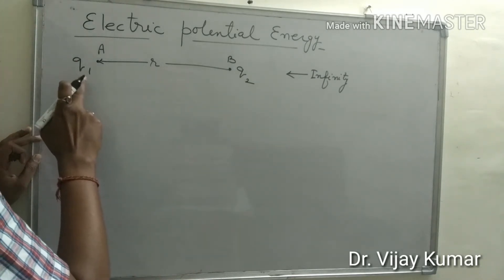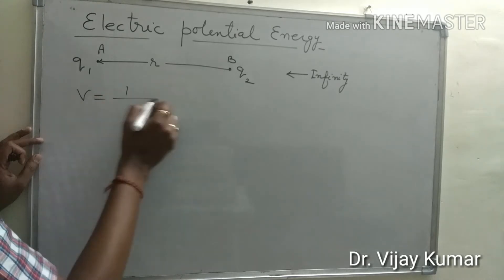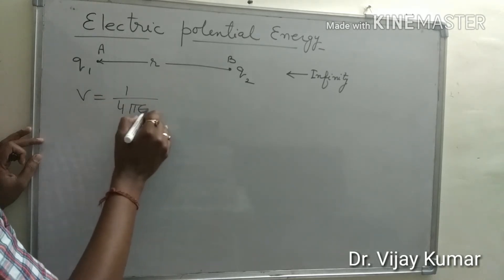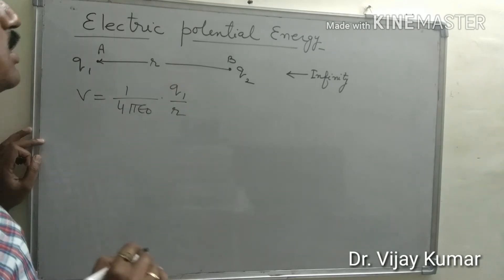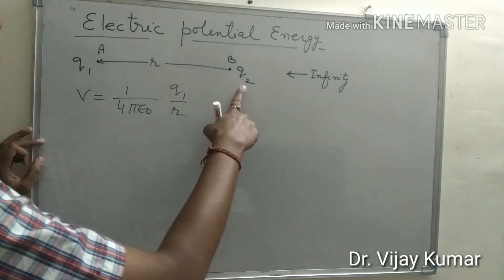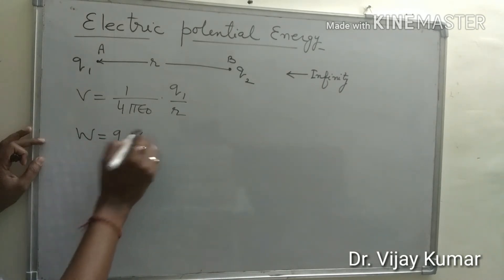Electric potential defect due to Q1 at point V is given by V equals 1 upon 4π epsilon naught Q1 upon R. The work done to bring Q2 charged particle from infinity to V should be W equals Q2 into V.